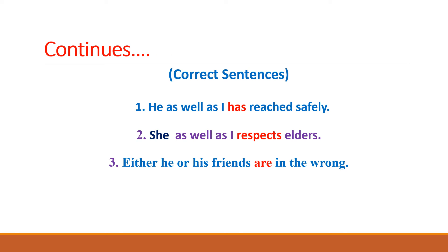Here are the solutions and correct sentences. Sentence number 1: 'He as well as I has reached safely.' In the incorrect sentence, 'have' was used according to 'I,' but the rule is that when two subjects are joined with 'as well as,' the verb or helping verb is used according to the first subject — which is 'he' — so 'have' is replaced with 'has.' Sentence number 2: 'She as well as I respects elders.' Since 'she' is a third-person singular, the verb is used according to the first pronoun, so it takes 's,' giving us 'respects.'